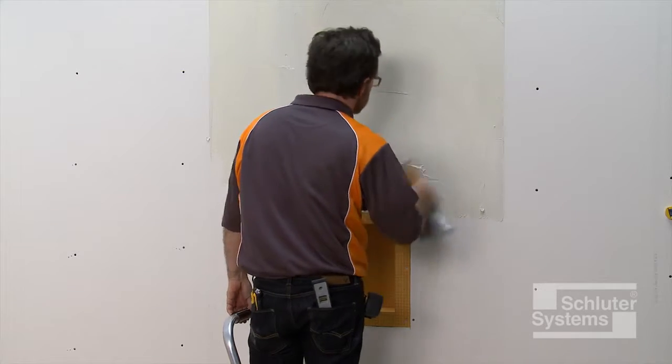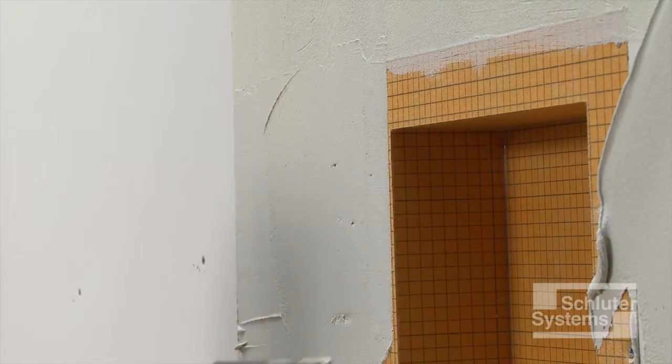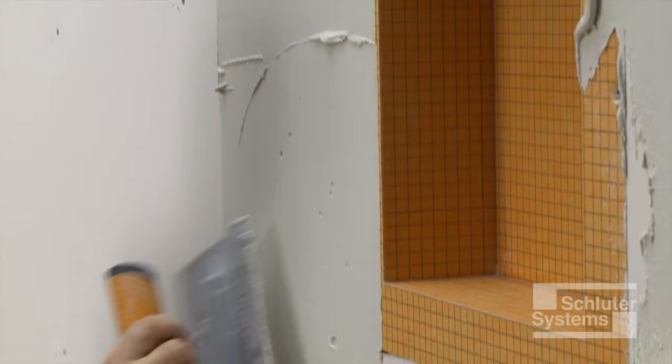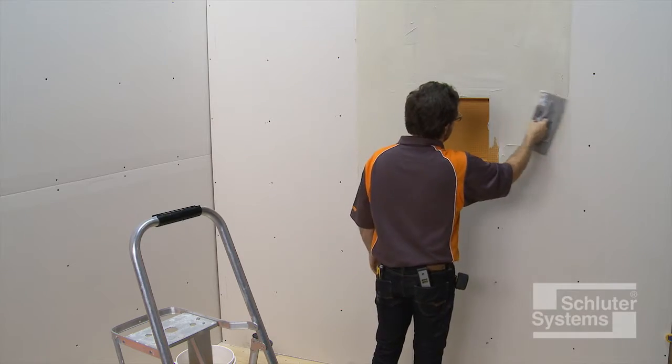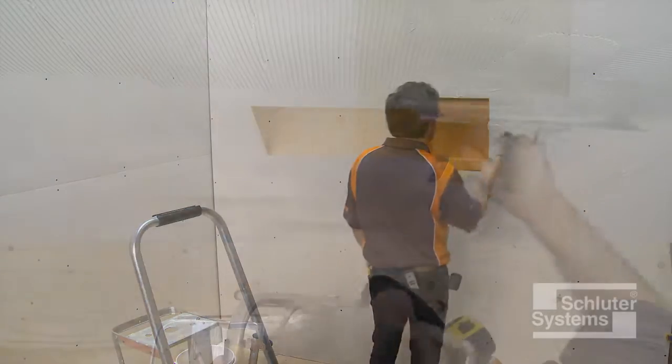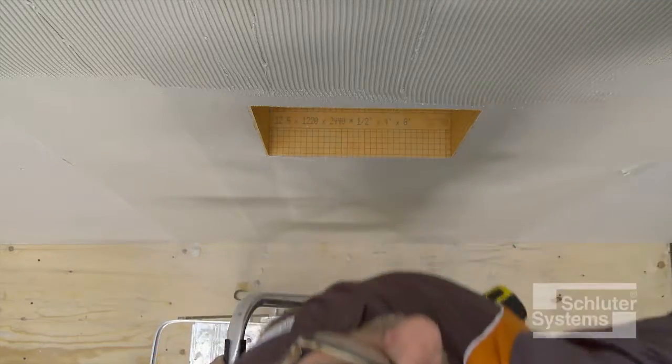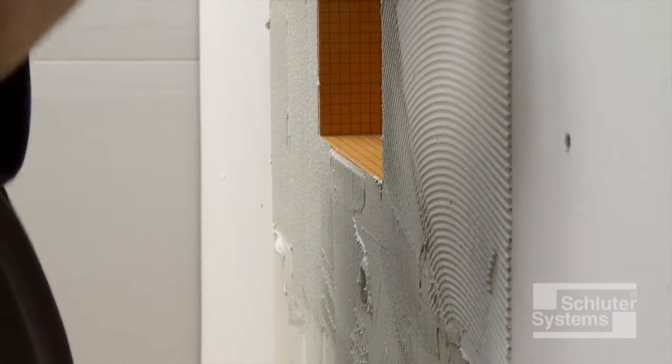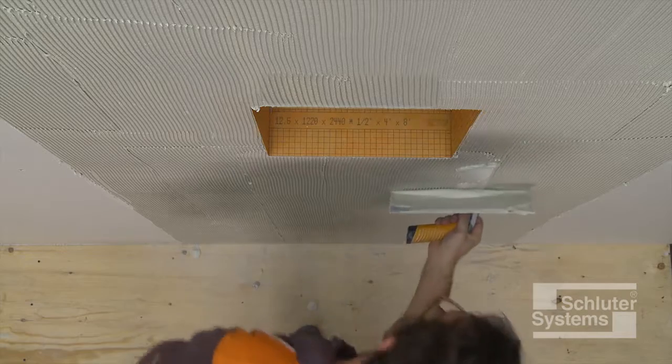Apply a thin layer of mortar to the gypsum board and niche with the flat side of the trowel to produce solid contact with the surface. Then comb additional mortar using the notched side of the trowel. The mortar is applied up to the niche opening.